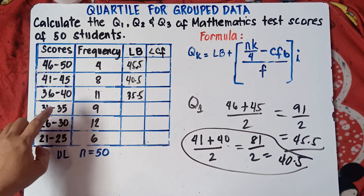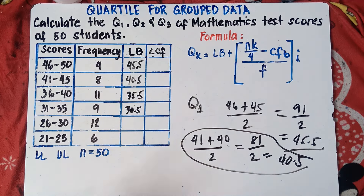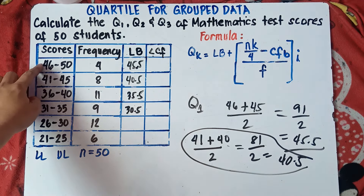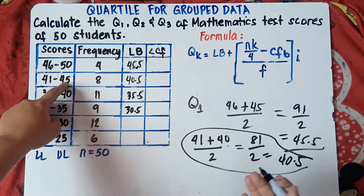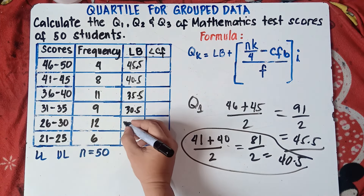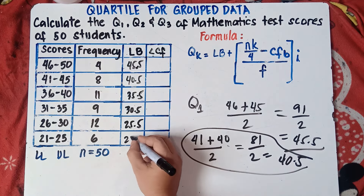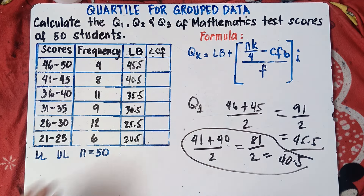Continuing: 31 minus 0.5 is 30.5, 26 minus 0.5 is 25.5, and 21 minus 0.5 is 20.5. You are all set for the lower boundary.